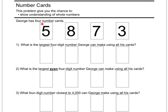Here we have number cards. George has four number cards: 5, 8, 7, and 3. Question one: what is the largest four-digit number George can make using all his cards? You're going to want to put the biggest number in the leading position and go from largest to smallest. Question two: what is the largest even four-digit number George can make using all his cards? Since 3, 7, and 5 are all odd, the number has to end in 8.